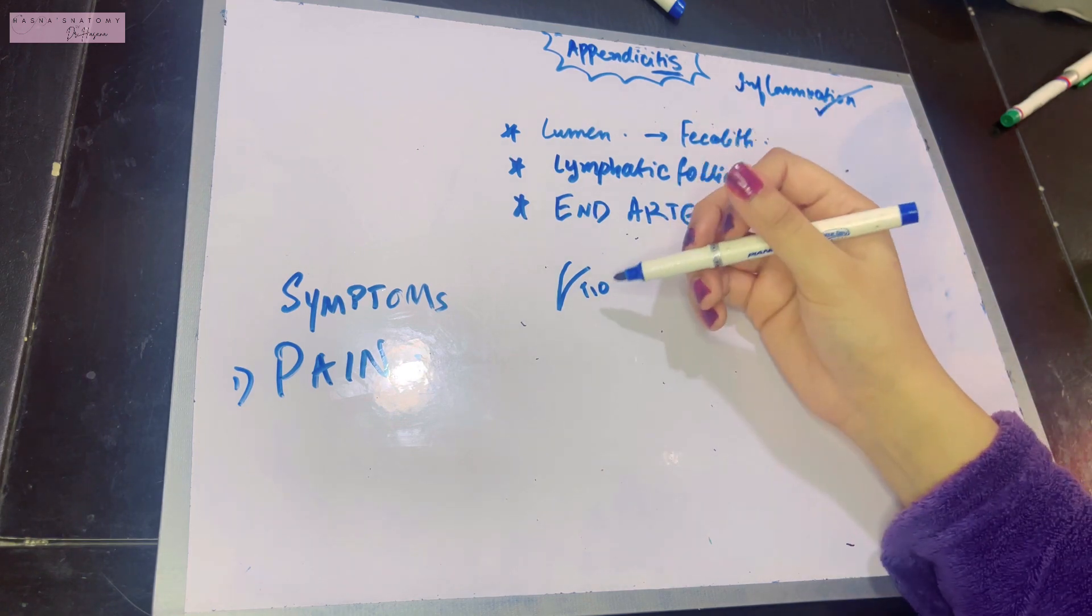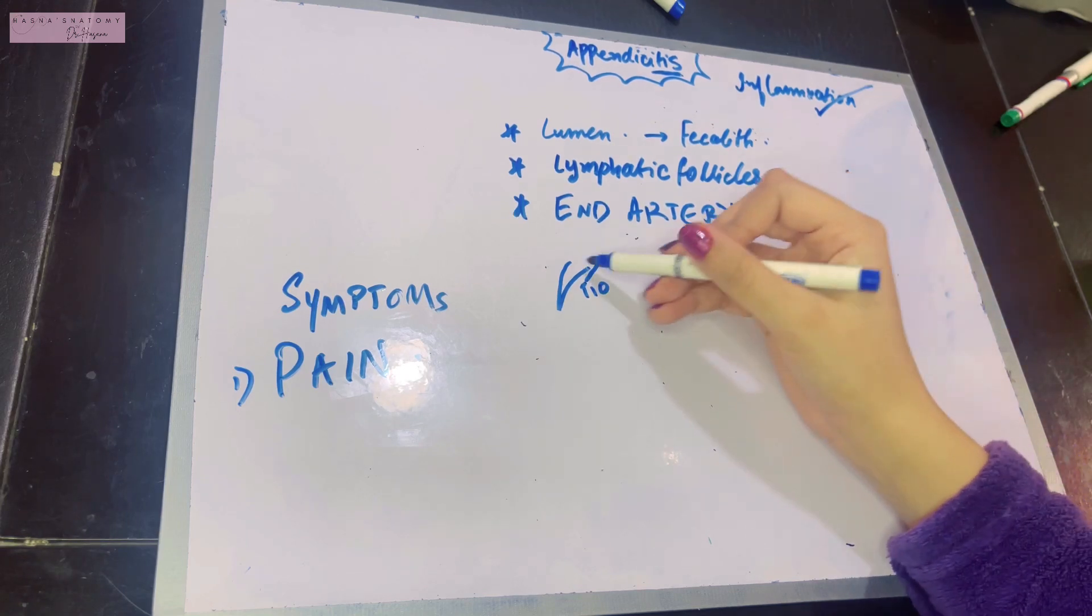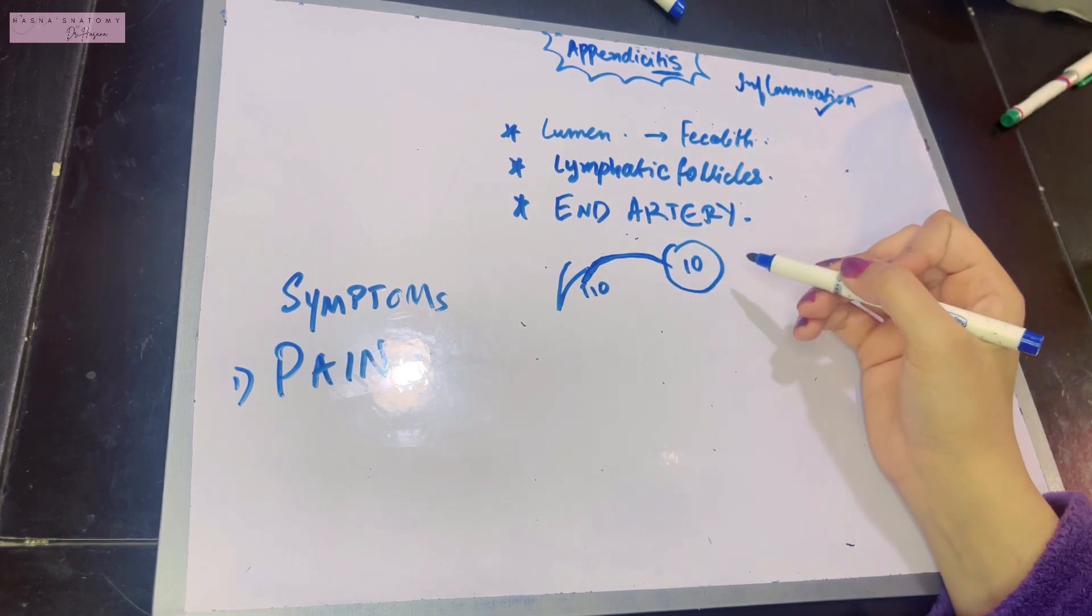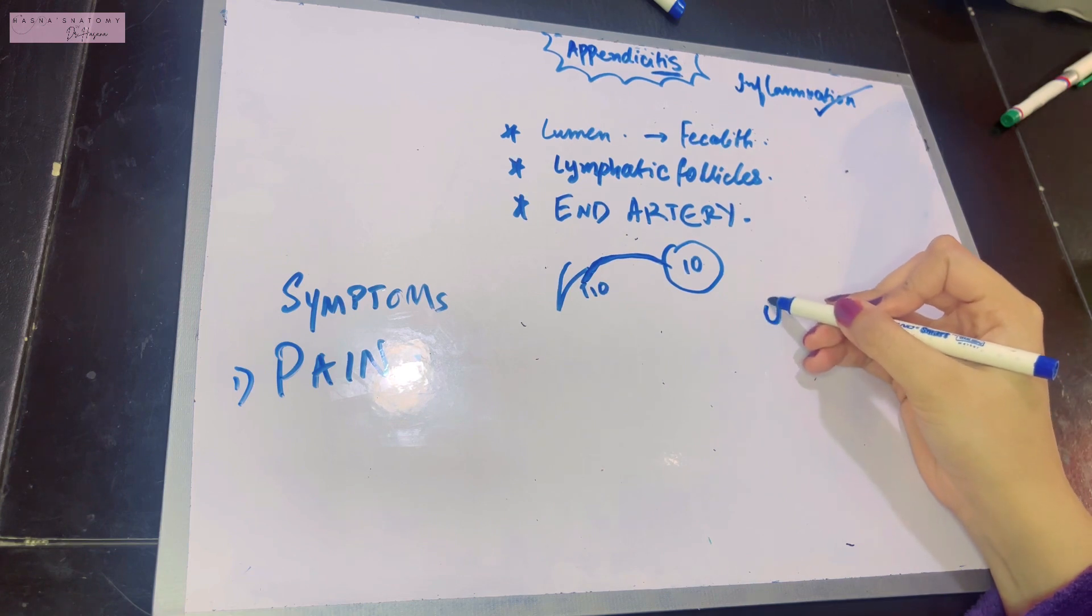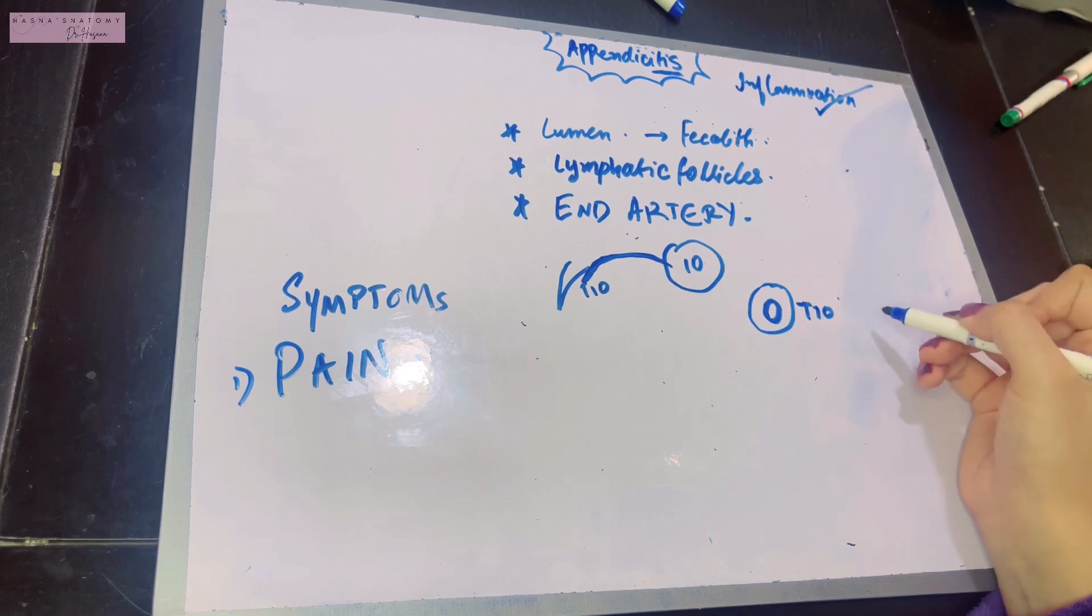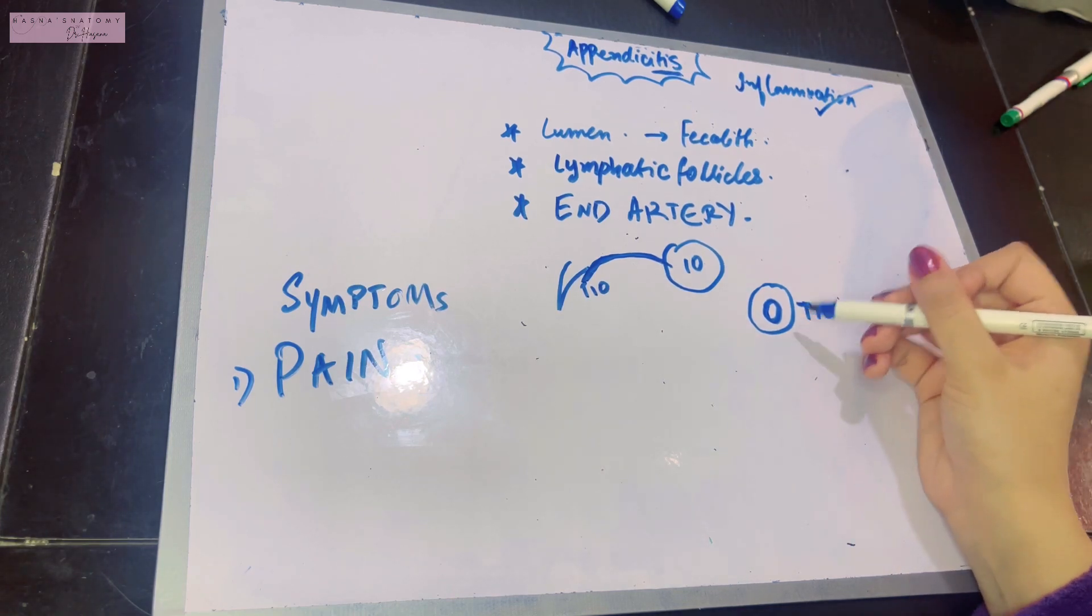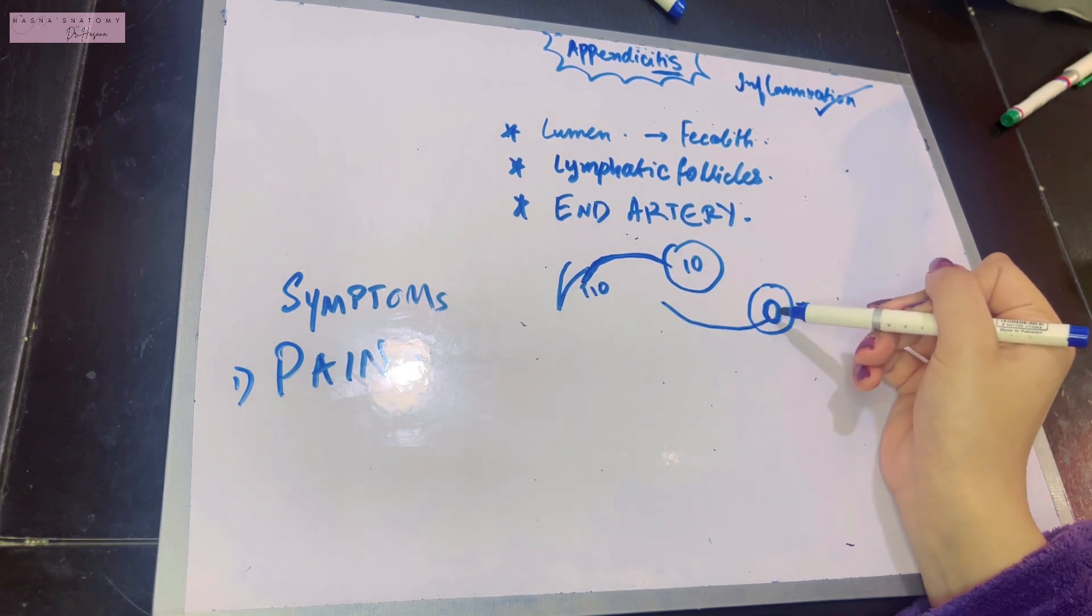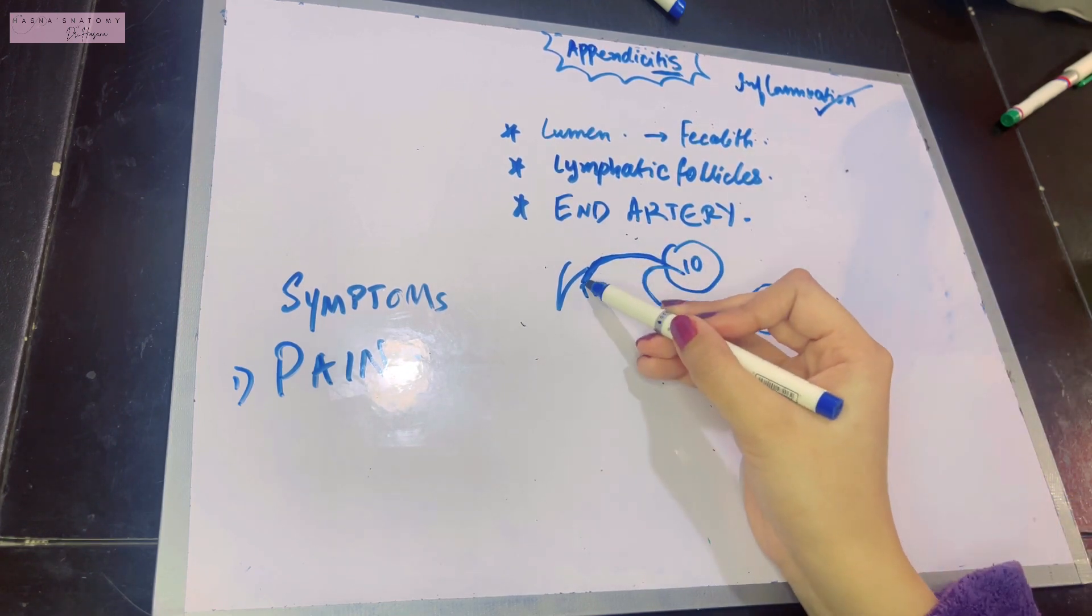The sympathetic fibers are going to come from T10. Let's suppose the sympathetic fibers are going through this segment. We also remember the T10 segment was responsible for supplying the umbilicus area. The skin around the umbilicus is at the T10 segment and is supplied by that segment.